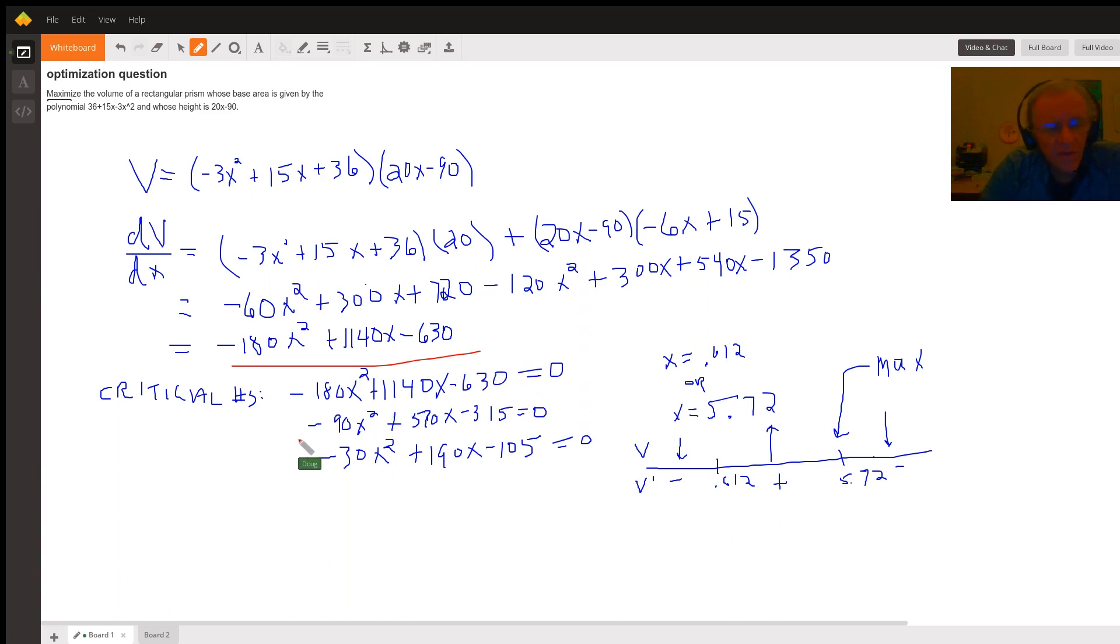To find the critical numbers, we want to set that first derivative equal to zero and solve for x. I did a little bit of simplification here, but in the end I went to a calculator to find the values of x that set this equal to zero and found that there are values of x that are approximately 0.612 or 5.72.